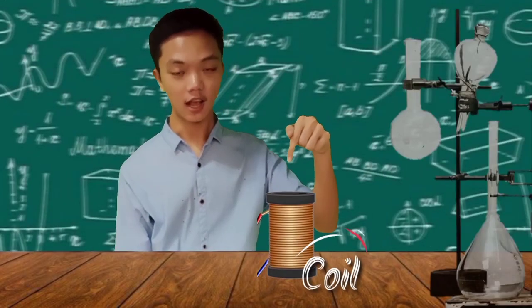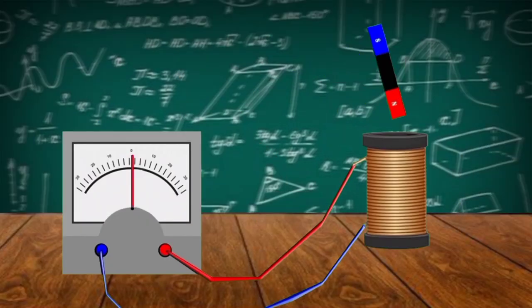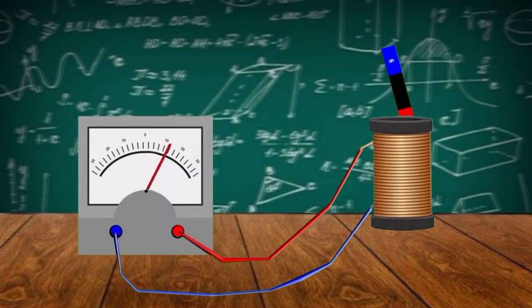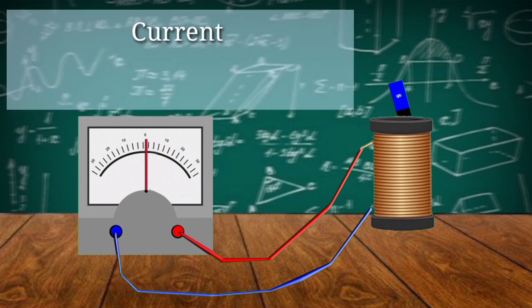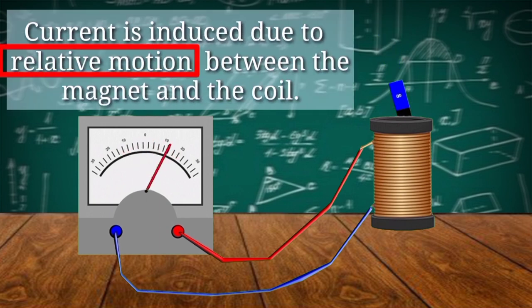He used a coil, galvanometer, and a magnet. When he first tried it, the needle was not deflecting, which means no current was being induced. The motion of the magnet is causing the needle to deflect. Current is induced in the coil due to relative motion between the magnet and the coil.